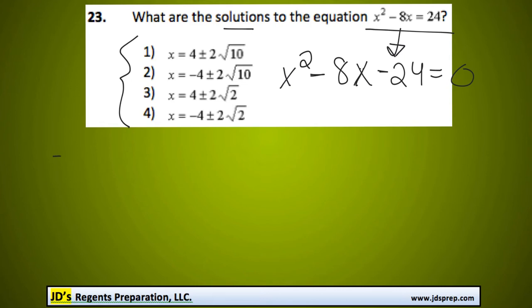So our quadratic formula is negative b plus or minus the square root of b squared minus 4ac all over 2a. So our a term is 1, our b is equal to negative 8, and our c is equal to negative 24.